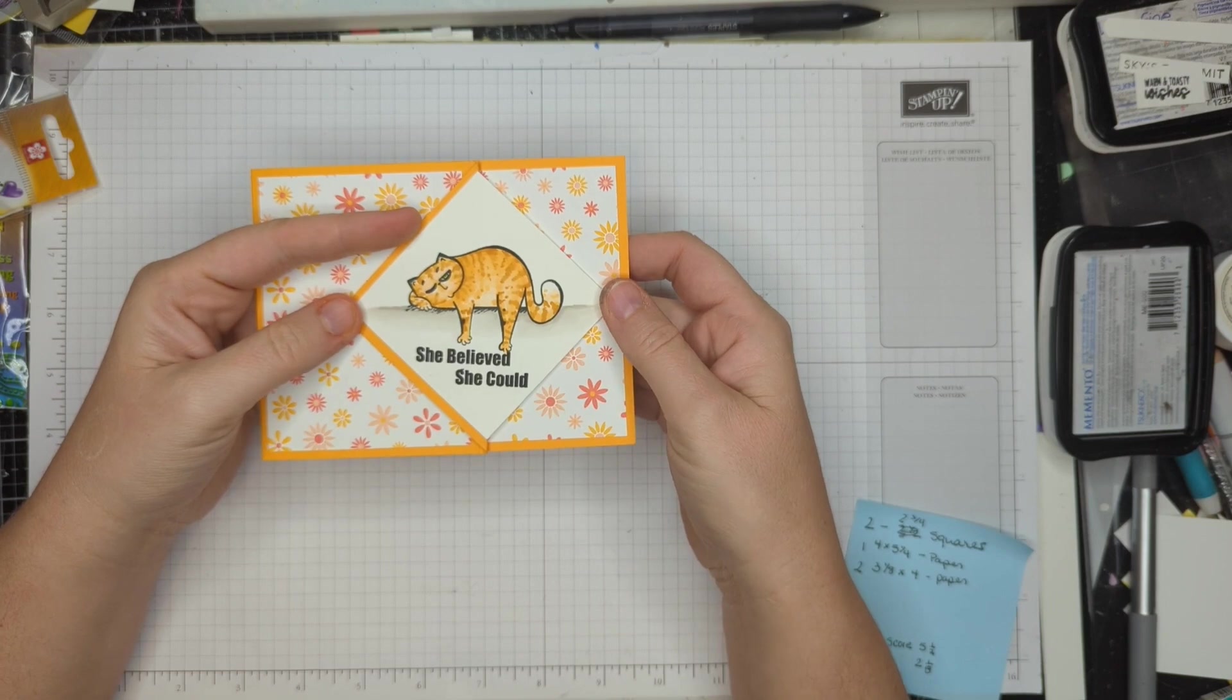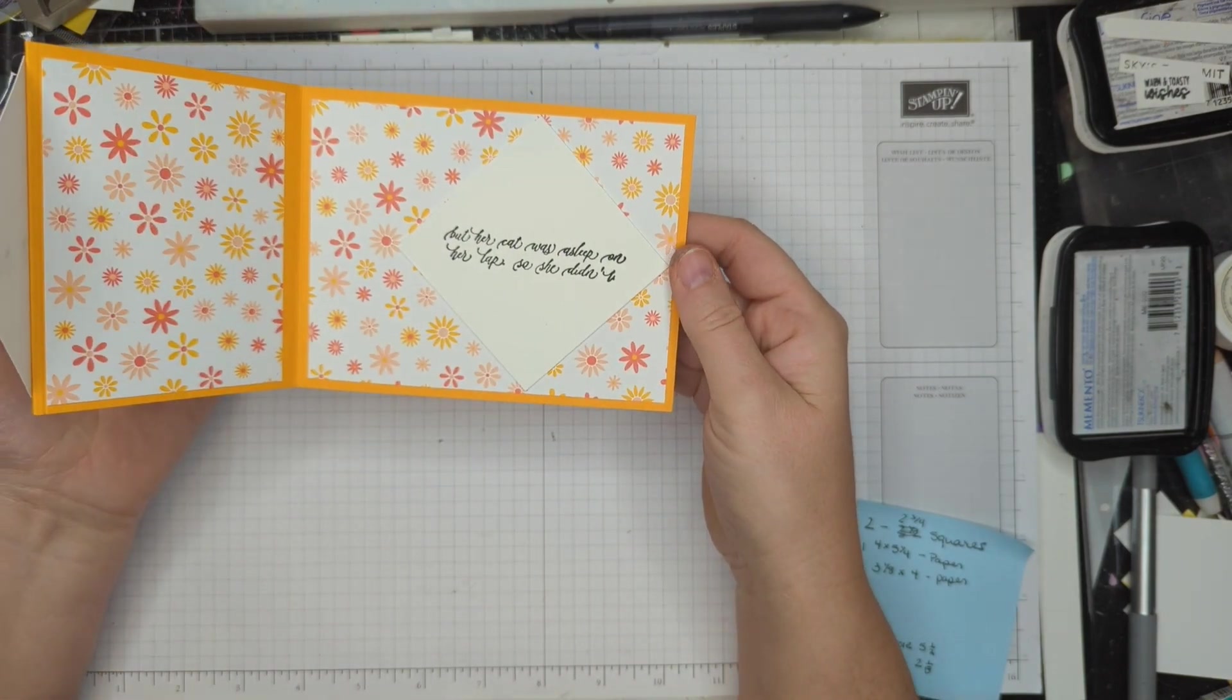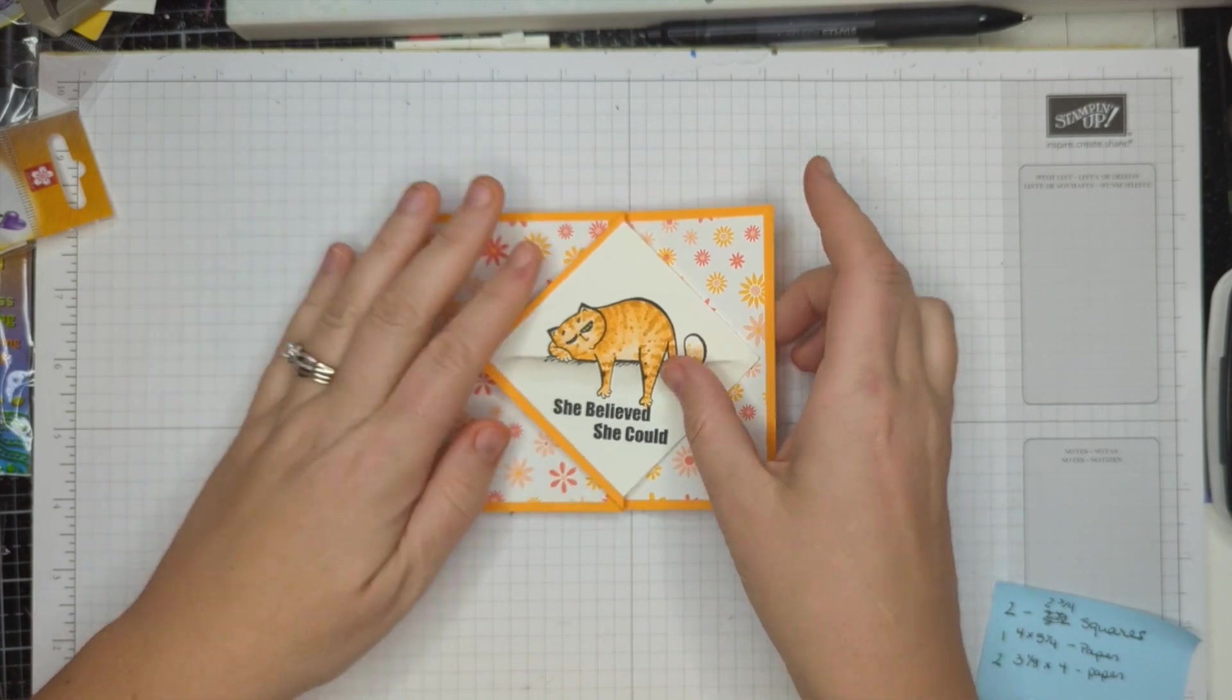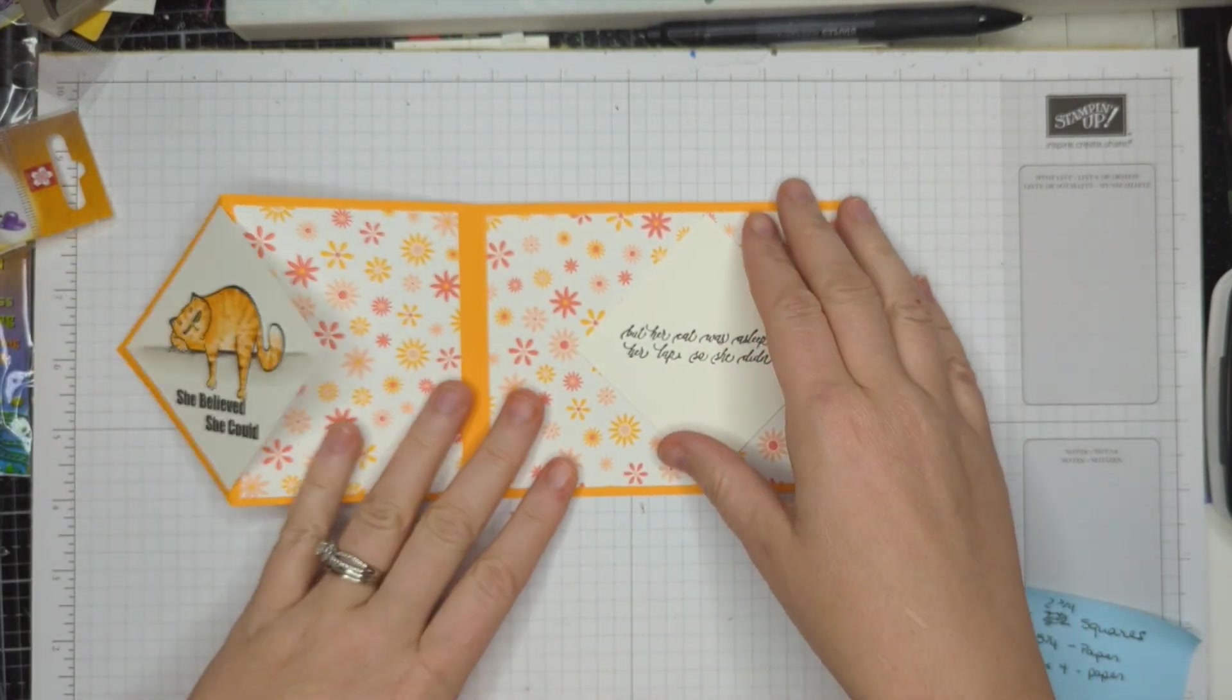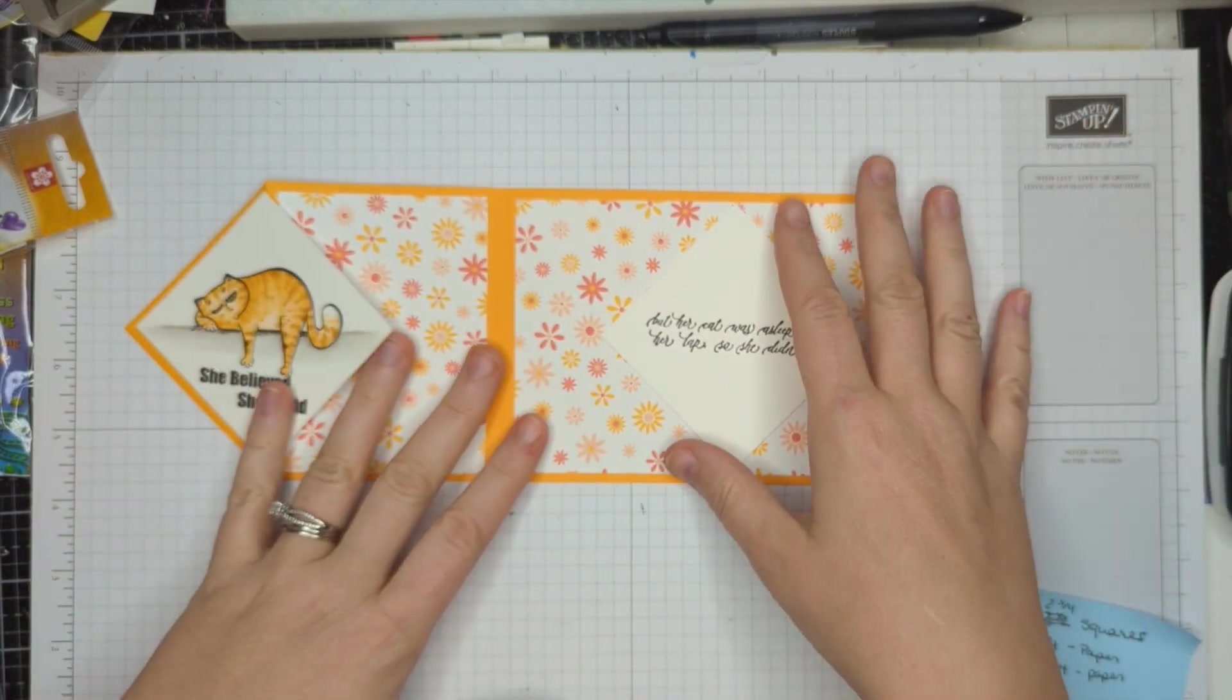On the outside it says she believes she could, but her cat was asleep on her lap so she didn't. And I have many cat lovers in my family, so I know exactly who I'm going to send this to. But let me show you how to do this.